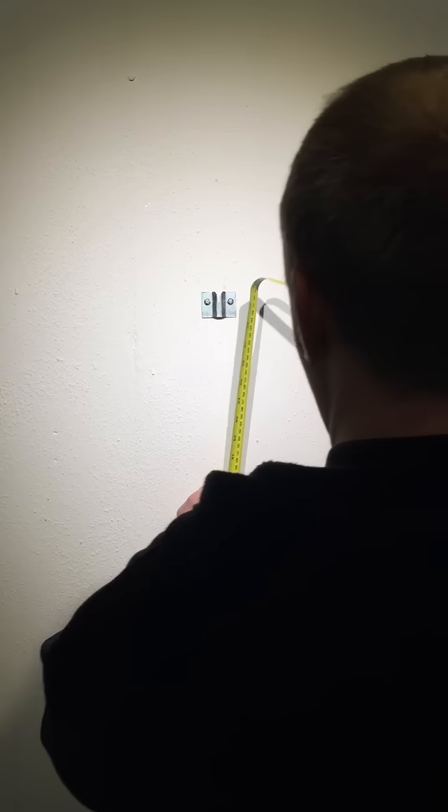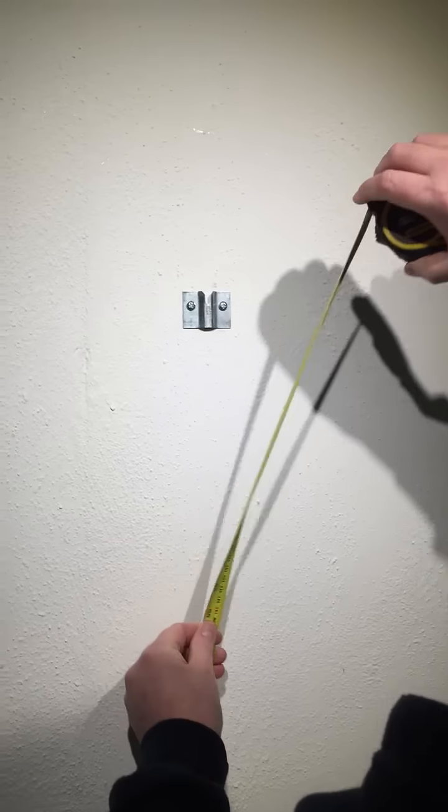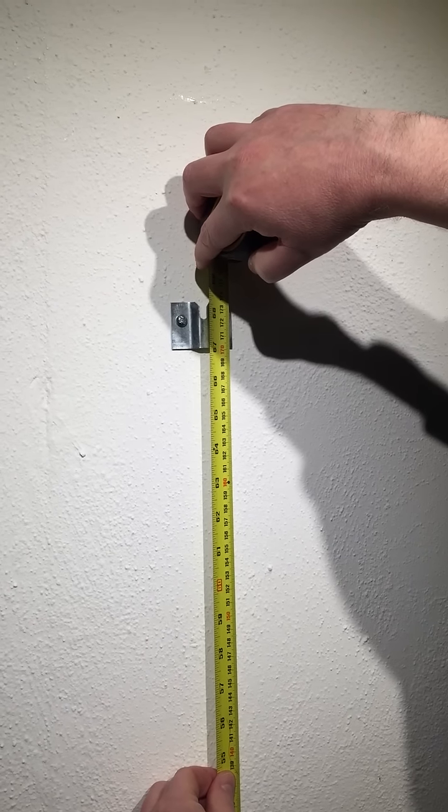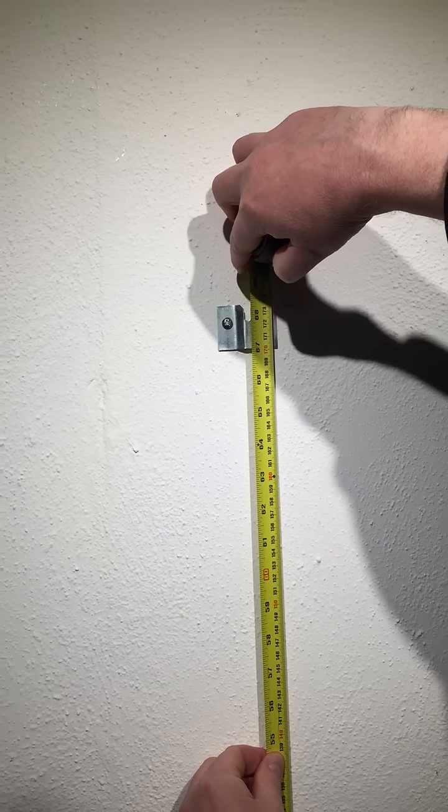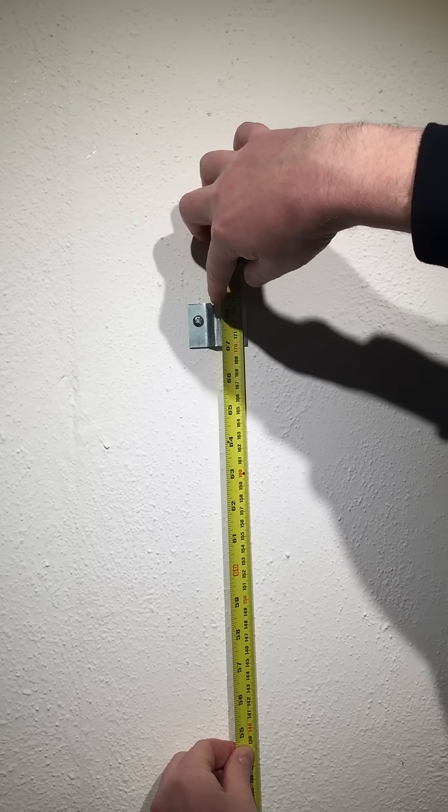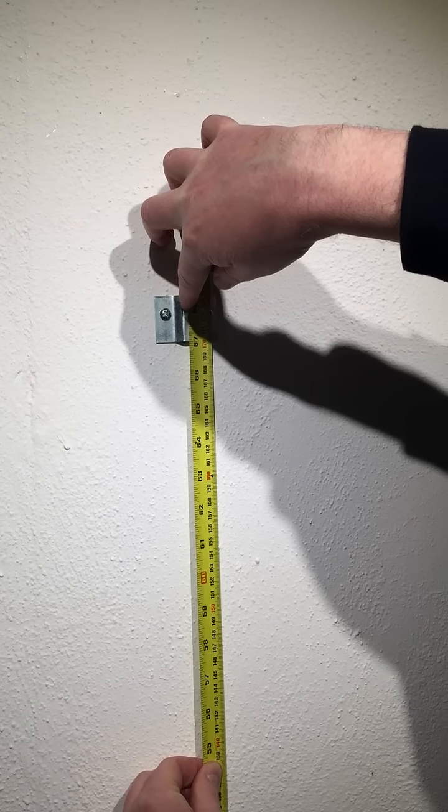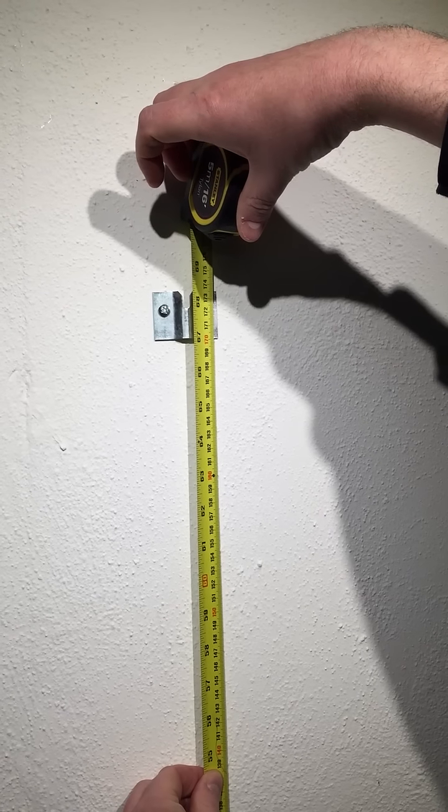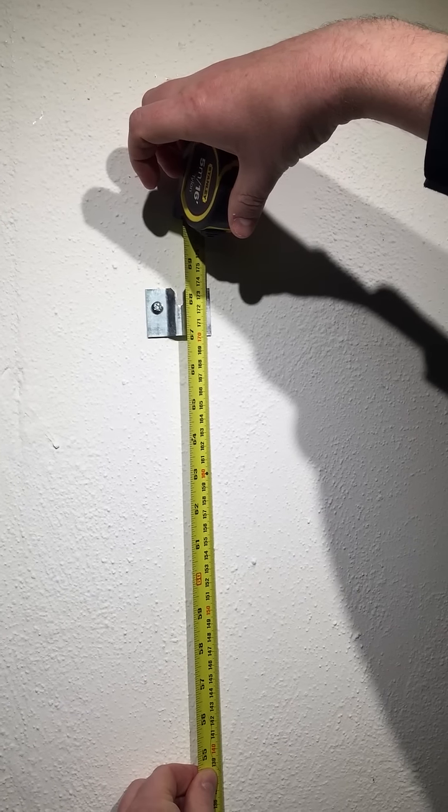Now the height that we want to do this at is 5 feet 8 or 173 centimeters. So you can see there 5 feet 8 or 173, and that's going to be where the bullseye is going to be. So that's what we want to measure from the floor upwards.